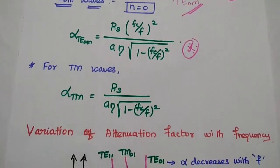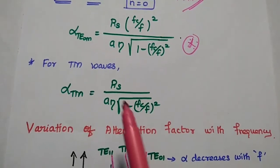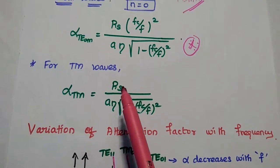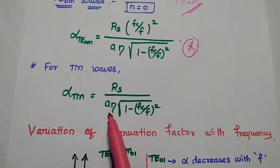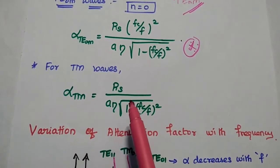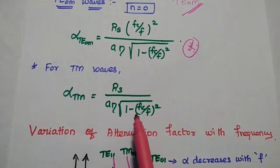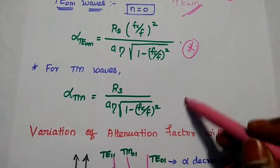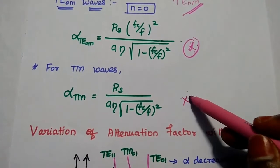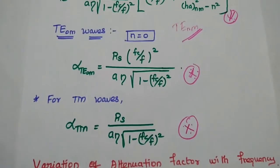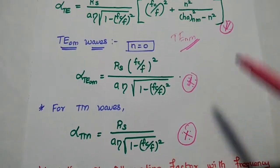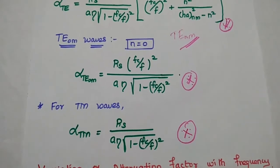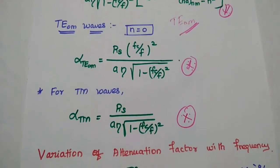Next, for TEM waves, we can get the value as RS divided by (A times eta times square root of (1 minus (fc/f)^2)). These three expressions together are the attenuation factor values for the circular waveguide.